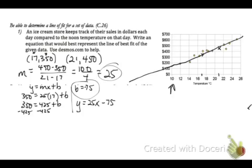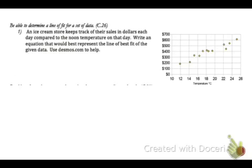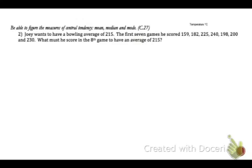Now let's look at number 2. Number 2 is actually a concept from unit 5. So you need to be able to figure the measures of central tendency, mean, median, and mode. Joey wants to have a bowling average of 215. That's a mean. The first 7 games, he scored those scores that you see. What must he score in the 8th game to have an average of 215? So we know the average. To find the average or the mean, you're going to add up all the values that you have, and then divide by those number of values.